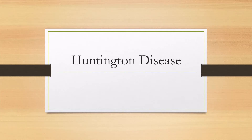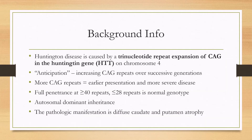Huntington disease is caused by a trinucleotide repeat expansion of CAG in the Huntington gene, or HTT gene, on chromosome 4. There is a unique feature of trinucleotide repeat expansion diseases called anticipation, where successive generations will have an increase in that trinucleotide repeat. For example, a father could have 40 repeats and the daughter could have 50 repeats. More CAG repeats means the disease will present earlier and with more severity.